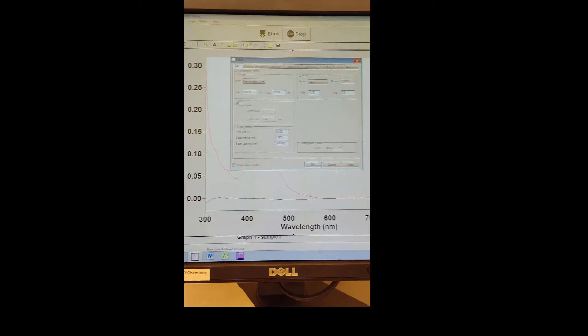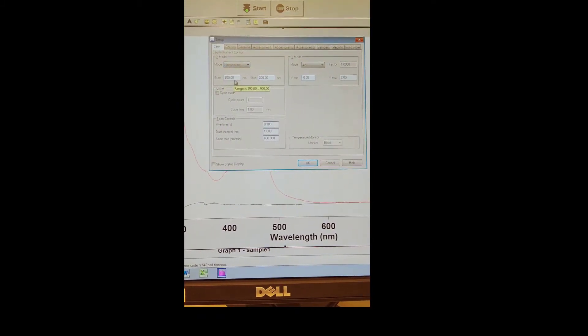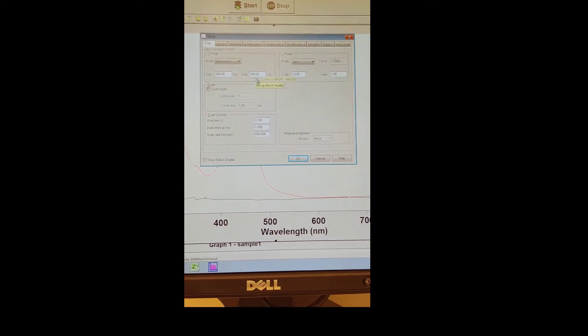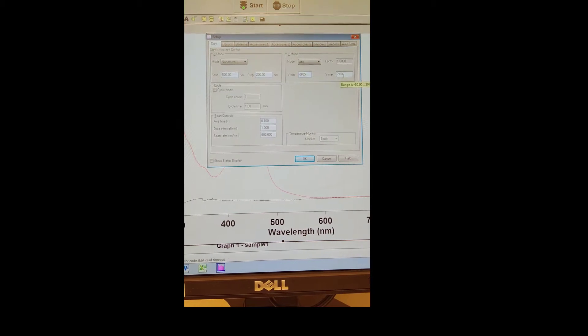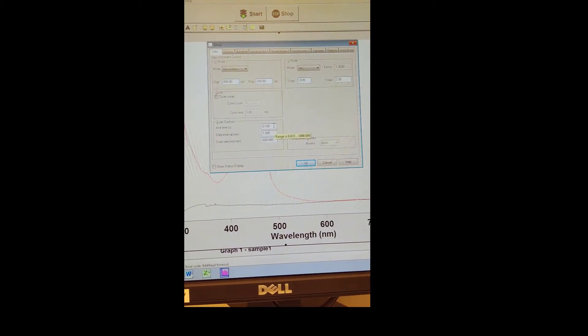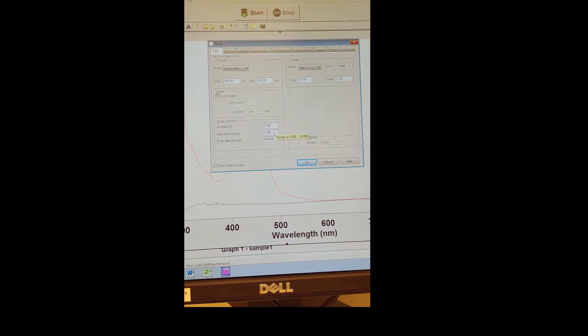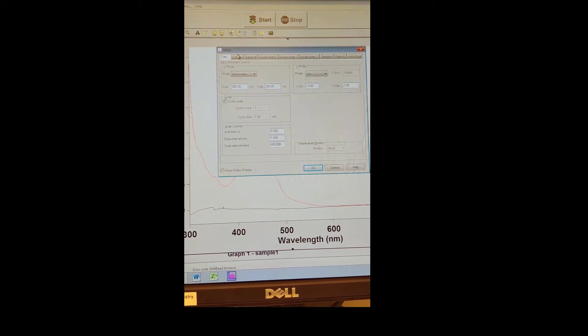Click Setup, and then under the Cary tab, make sure you're in nanometers mode. Adjust the starting and stopping wavelengths depending on what range you're interested in scanning over. Make sure you're in absorbance mode, and those are pretty typical Y-min and Y-max values right there. Same thing for scan controls. Those three values right there are pretty standard.